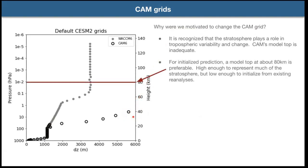There's a lot of work going on with CESM for initialized prediction. We initialize from pre-existing data assimilation products like ERA5. For initialized prediction you want a good representation of the stratosphere because it's a potential source of predictability on seasonal timescales. While WACCM has a good stratospheric representation, its model lid is so high that it's difficult to initialize from existing reanalysis products that don't go up that far. The optimum from an initialized prediction standpoint is a model lid at about 80 kilometers — you can still initialize from ERA5 and still have a good stratospheric representation.